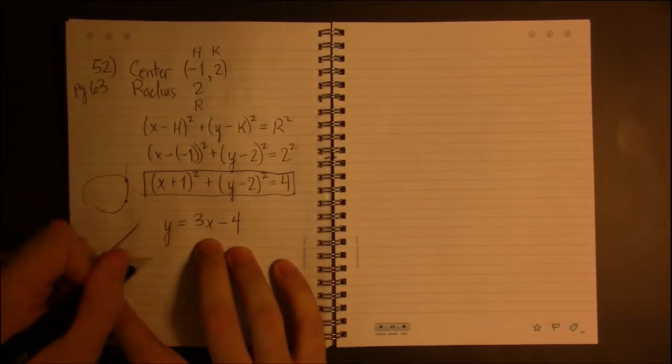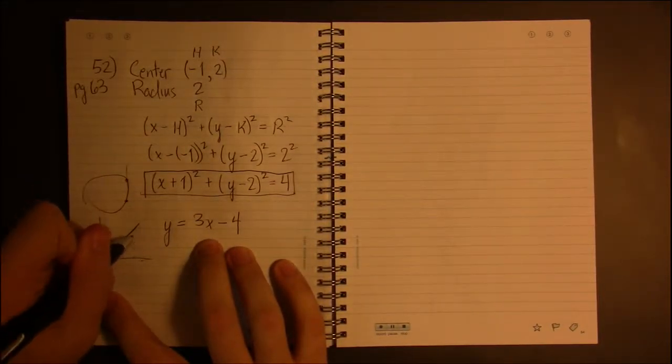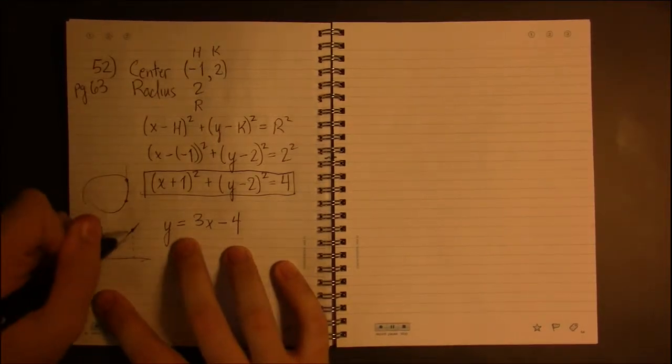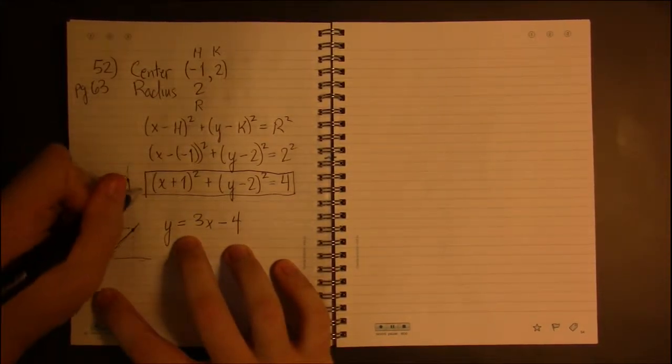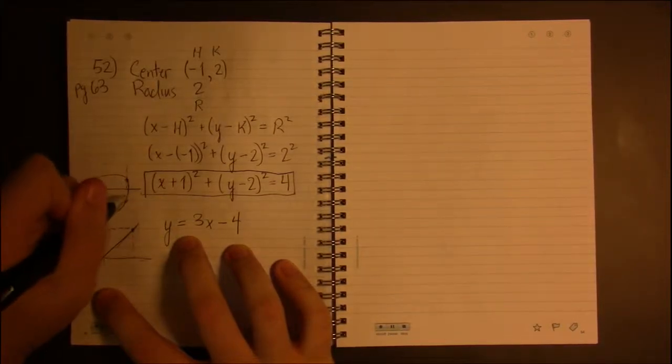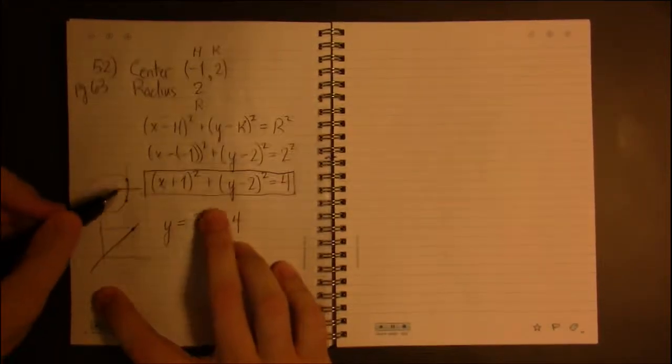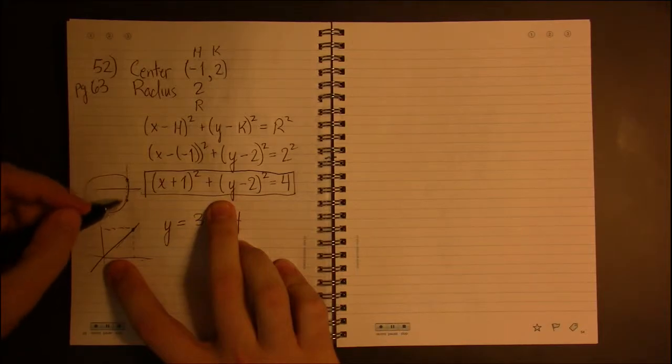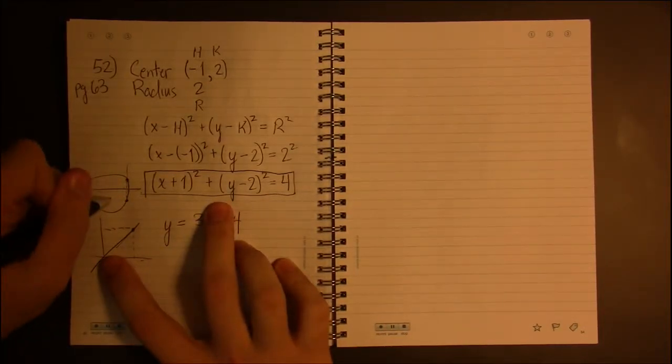On the line, if you know what the X is, this can tell you what the Y is and vice versa. Here, if you know what X is, you can find the Y's associated with that X, and again, vice versa.